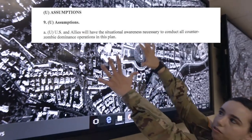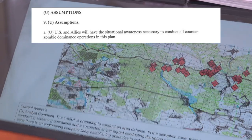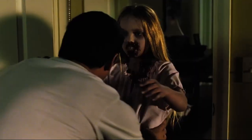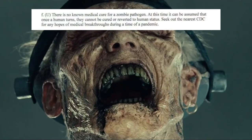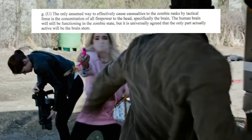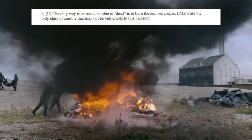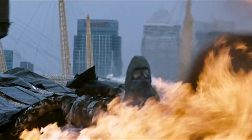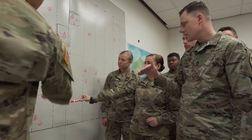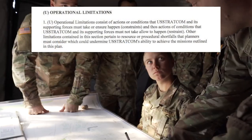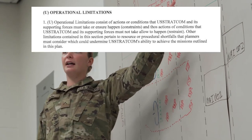There are several assumptions listed in this document, such as: the US and allies will have the situational awareness necessary to conduct counter-zombie dominance operations; zombie forces will become stronger with each human casualty; there is no known medical cure for the zombie pathogen; concentrating force to the head is effective; the only way to ensure a zombie is dead is to burn the corpse; and zombies feel no pain, so riot control measures would be ineffective.